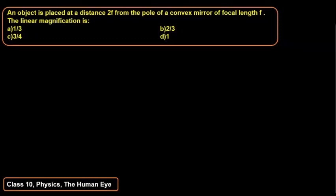Hello students, in this video we will discuss a problem from grade 10 physics and the chapter name here would be human eye. The question is that an object is placed at a distance of 2f from the pole of a convex mirror of focal length f, then we have to find out the linear magnification.